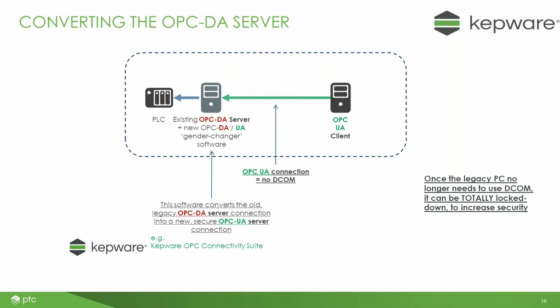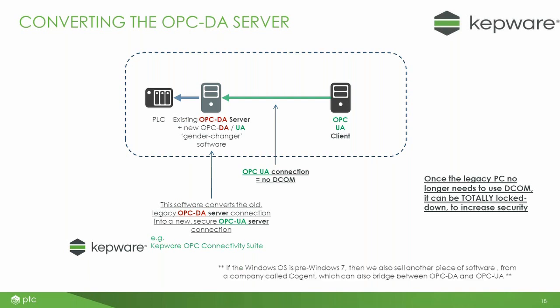If you do have an OPC DA installation on a system older than Windows 7 — perhaps Windows XP — Mac Solutions also sells a couple of other OPC utility ranges. One is from a Canadian company called Cogent, which does a system called OPC Gateway that performs a very similar DA-to-UA conversion function on Windows operating systems older than Windows 7, including Windows XP and Windows 2000. So if you have old installations, come and speak to us — it may be that KEPServer is the right thing for you, or it may be that the Cogent OPC Gateway is the solution. Come and talk to us and we'll show you the different options.